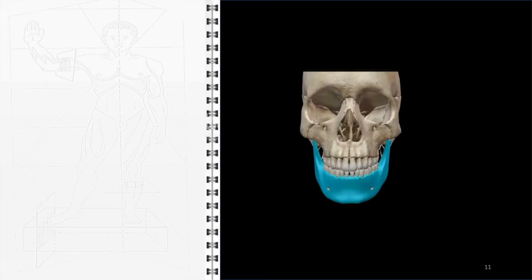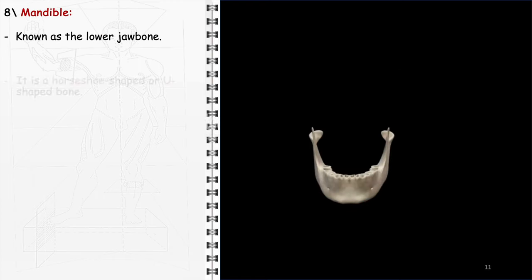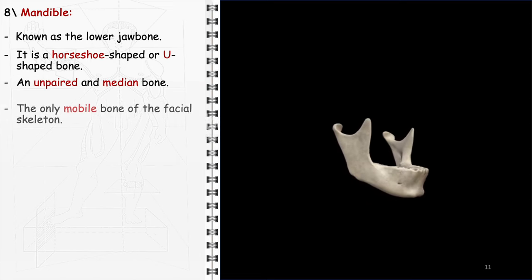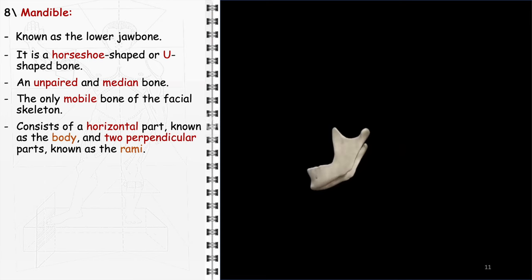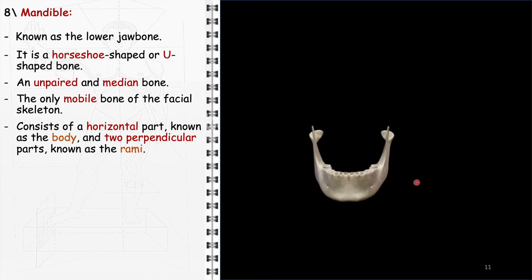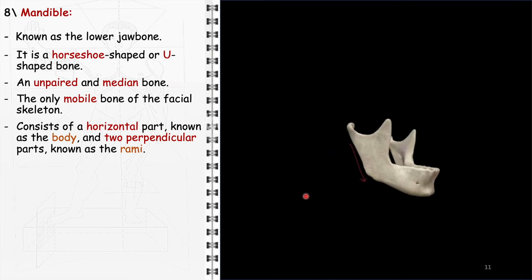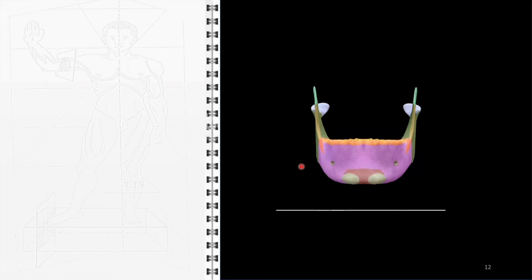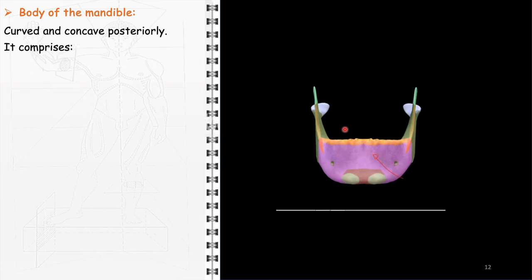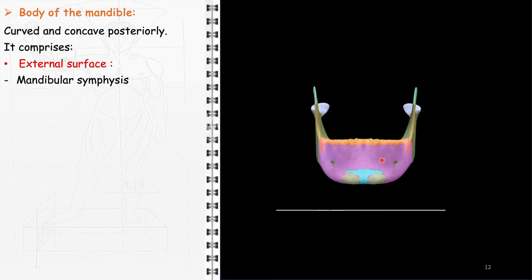The mandible, commonly recognized as the lower jawbone, is distinctively horseshoe or U-shaped. As an unpaired and median bone, it stands out as the only mobile bone within the facial skeleton, playing a crucial role in fundamental functions such as mastication, speech, and facial expression. The structure of the mandible can be divided into two primary components: the horizontal portion, known as the body, forms the lower jawline; and the rami, extending upward from each end of the body, are the two perpendicular parts. The body of the mandible, characterized by its curved and posteriorly concave shape, presents a comprehensive range of anatomical features across its external and internal surfaces. On the external surface, there is the mandibular symphysis, located at the midline, which is a faint ridge indicating where the two halves of the mandible fused during early development.